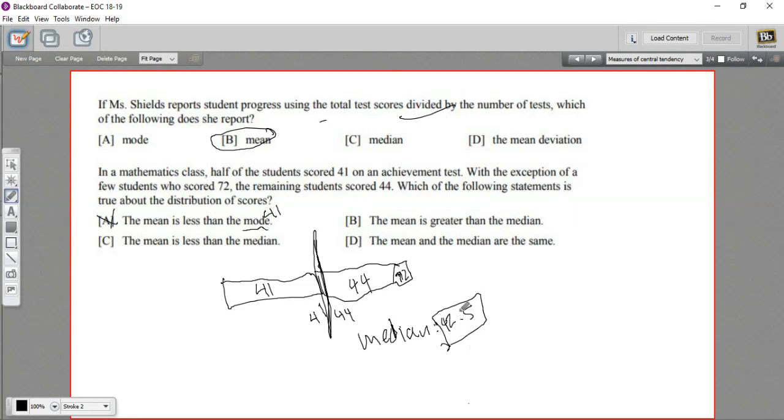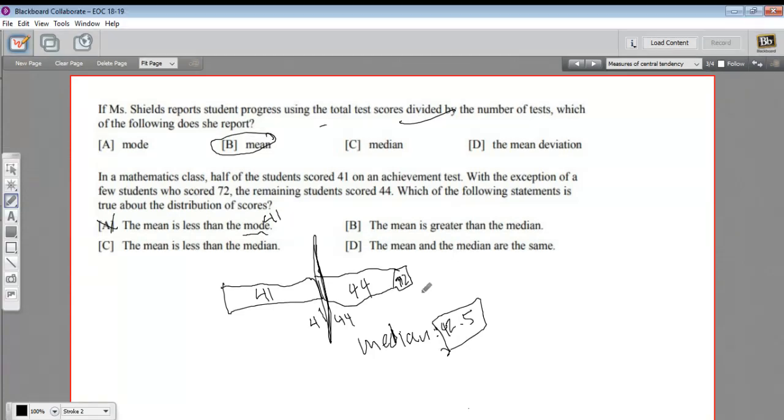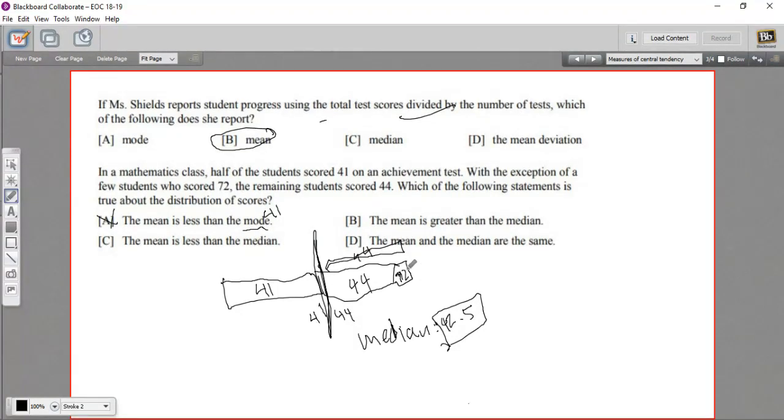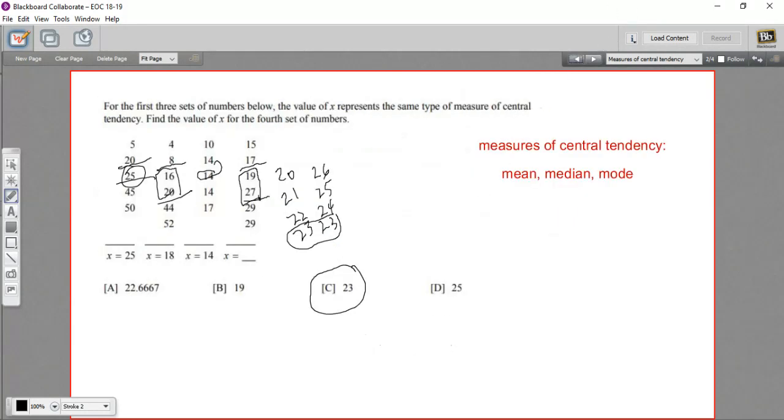Now, what could the mean here be? Well, let's think about it in a couple of different ways. Let's say all of these were 44s. What would the median be? Well, it'd be the average between 41 and 44. That is 42.5. But we've got a couple higher scores. That's going to raise the mean. So the mean has got to be higher than the median. So we're going to choose B. The mean is greater than the median. So that is a little bit of work with these measures of central tendency.